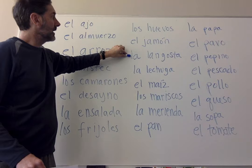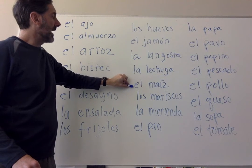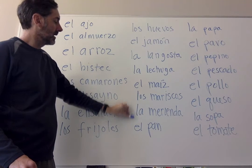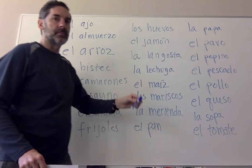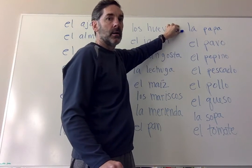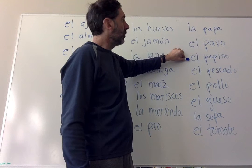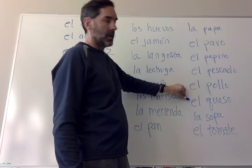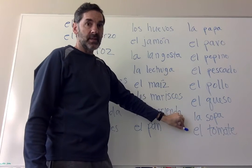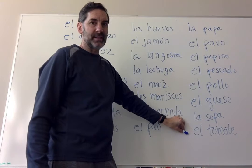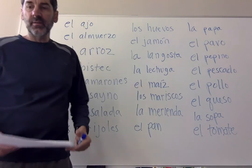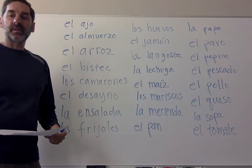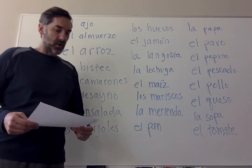La papa, el pavo, el pepino — cucumber, el pescado, el pollo, el queso, la sopa, y el tomate. These are most of the words on page 172. I ran out of space on the board to copy all of them, but you can figure out the ones I missed and finish out that last column.